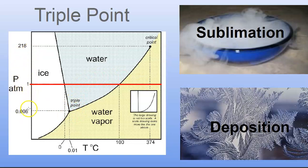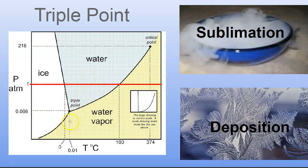Things get a little funny at super low pressures. If you crank the pressure down to about 0.006 atm — pretty close to a vacuum — there's a thing called the triple point where you can have solid, liquid, and gas all at the same time. A beaker could have ice, water, and water vapor steam all mixed together and they'd all be perfectly happy. If you go to even lower pressure, you actually skip the liquid phase altogether and go straight from ice to steam — a process called sublimation.